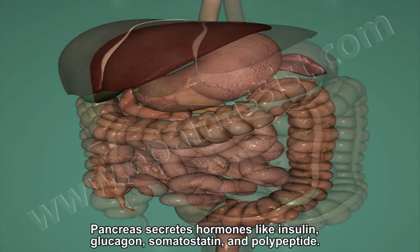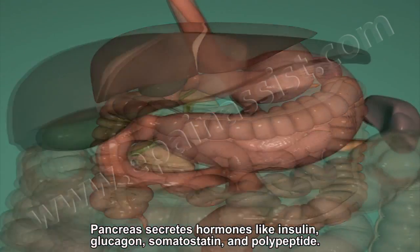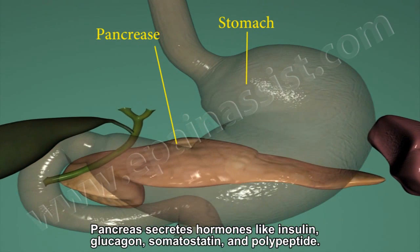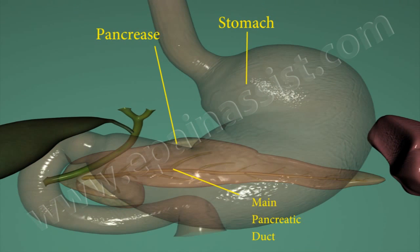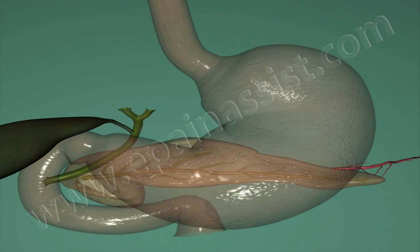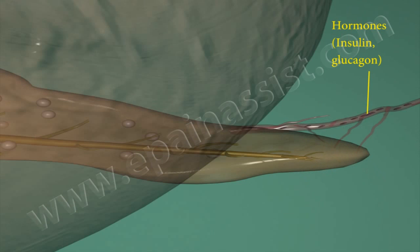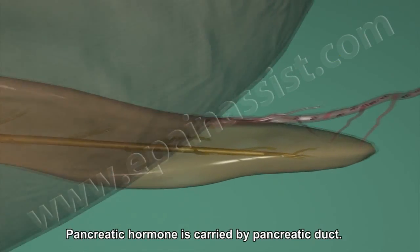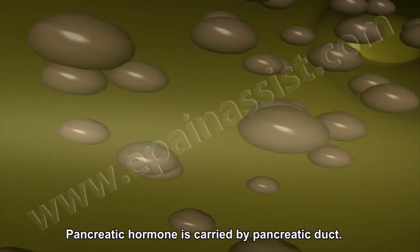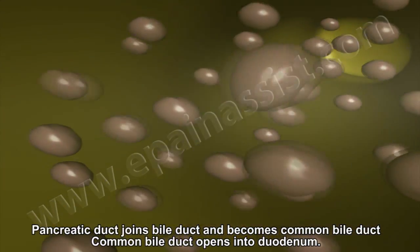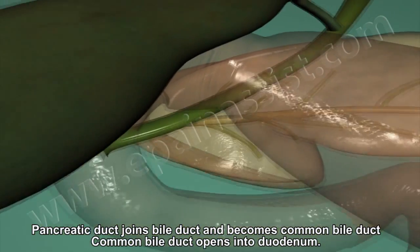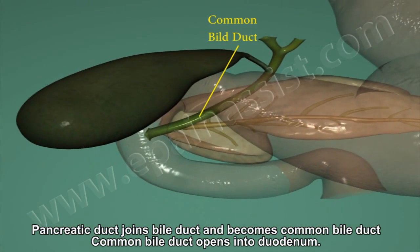The pancreas secretes hormones like insulin, glucagon, somatostatin, and polypeptide. Pancreatic hormones are carried by the pancreatic duct. The pancreatic duct joins the bile duct and becomes the common bile duct, which opens into the duodenum.